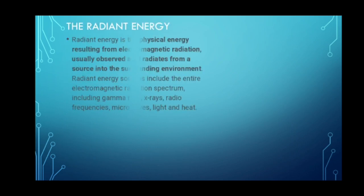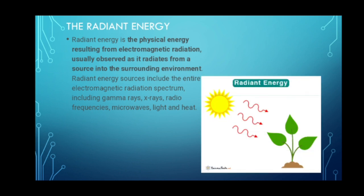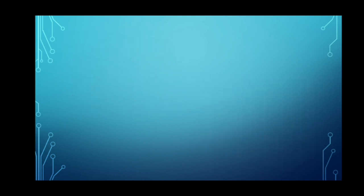Now we will look at radiant energy. What is radiant energy? Radiant energy is the physical energy resulting from electromagnetic radiation, usually observed as it radiates from a source into the surrounding environment. Radiant energy sources include the entire electromagnetic radiation spectrum, including gamma rays, X-rays, radio frequencies, microwaves, light, and heat. In this image, we can see the sun and a plant as an example of radiant energy. Photosynthesis, which we will explain in another session, is related to radiant energy.